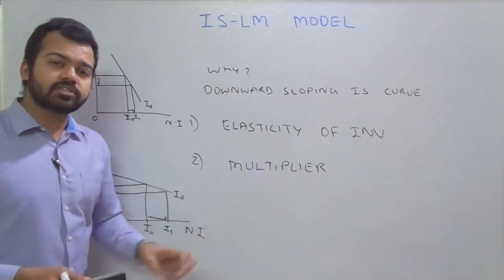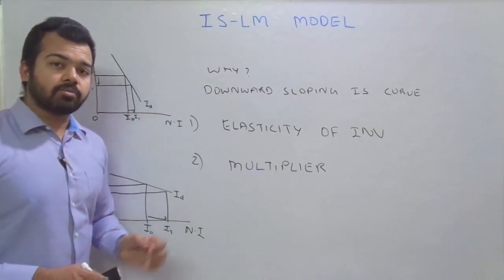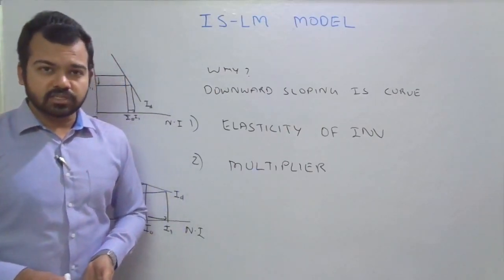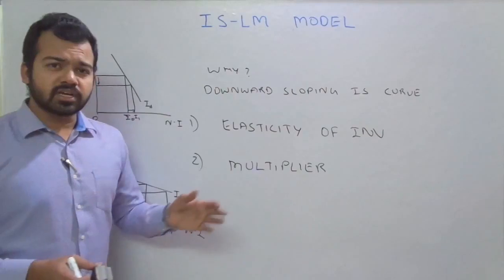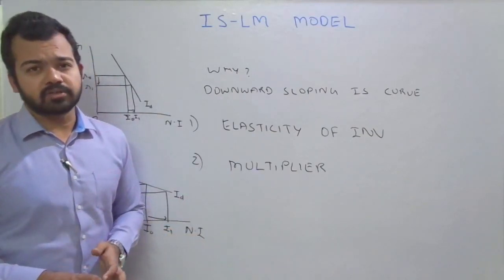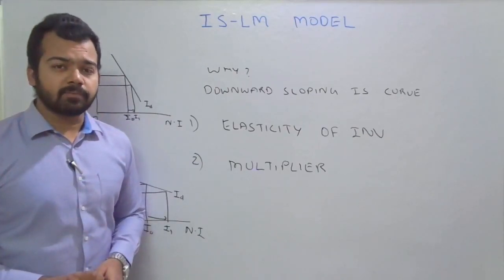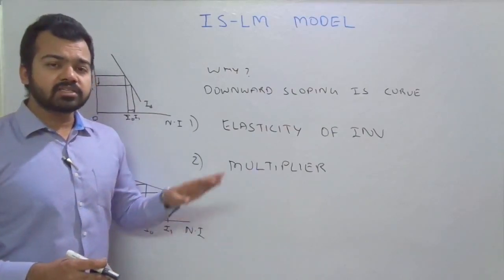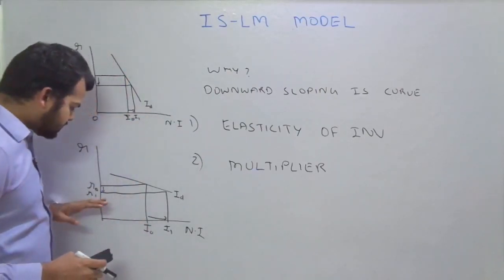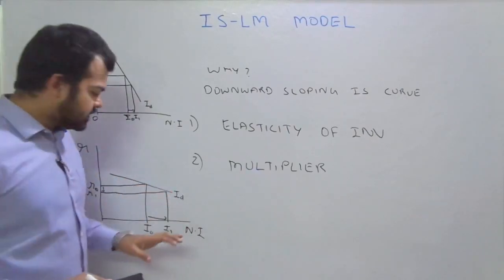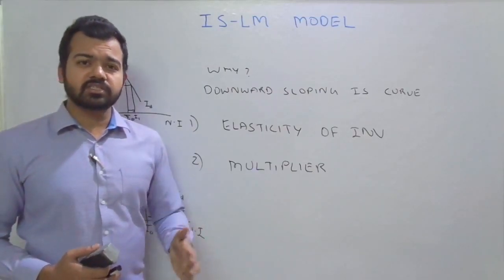For example, in the Indian economy, following demonetization in November 2016, interest rates were reduced by banks over successive months and quarters. But private investment is still lacking — which is very worrisome for the Government of India. That is the case of inelastic investment demand. In contrast, when a small reduction in interest rate leads to a manifold increase in investment, that depends on supply, demand, population growth, and other exogenous and endogenous factors.